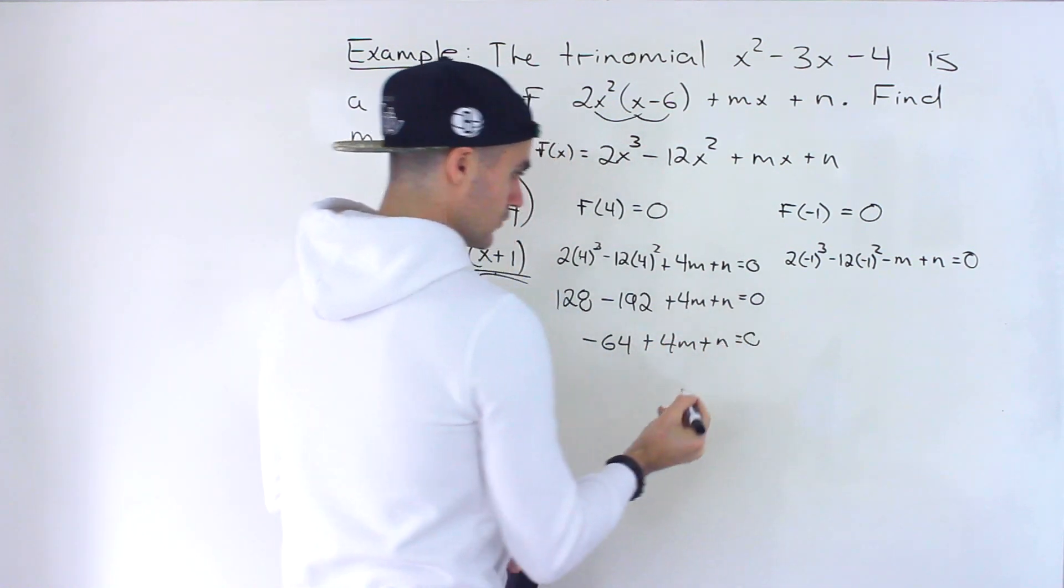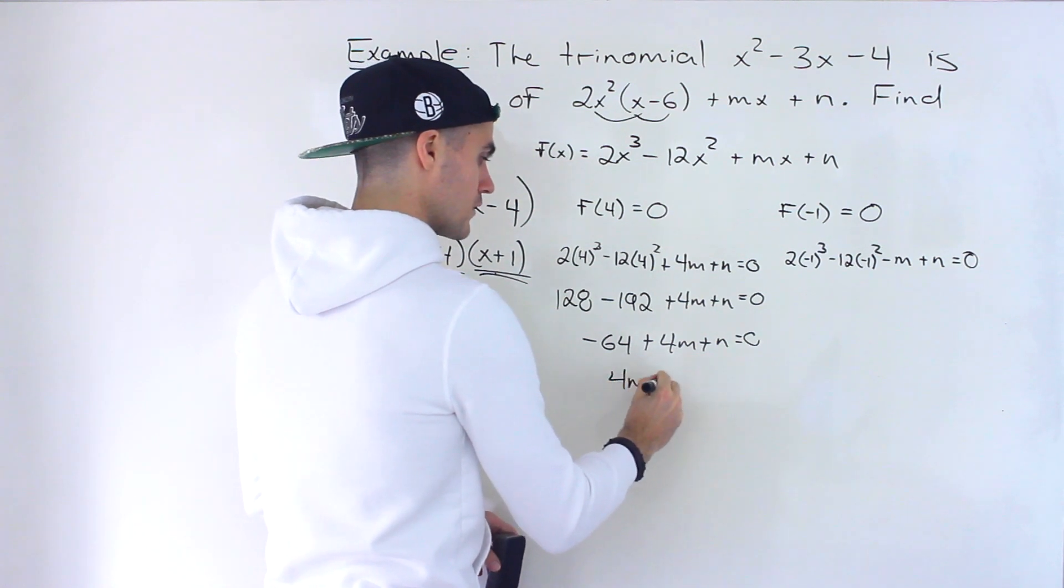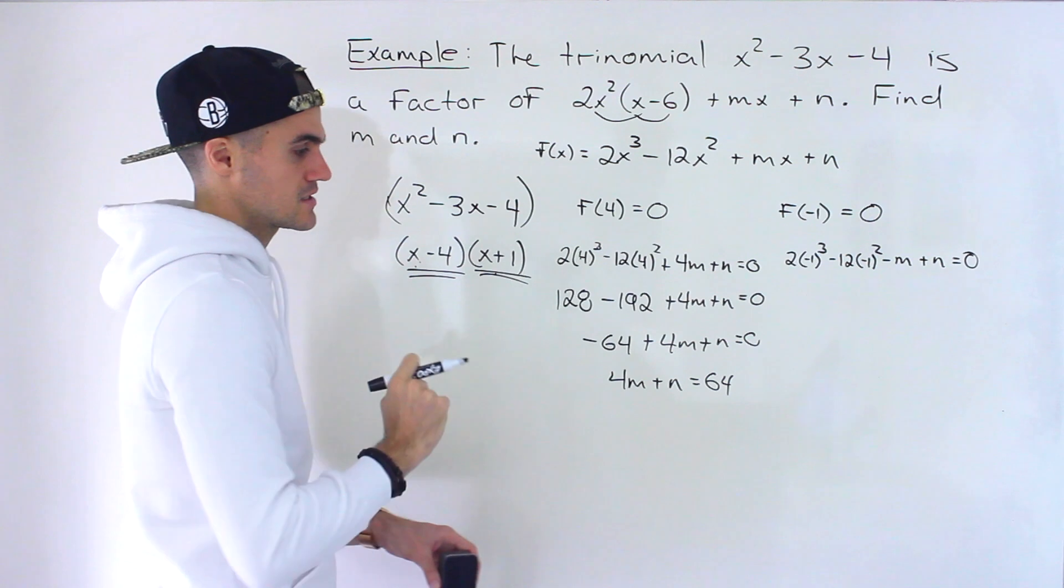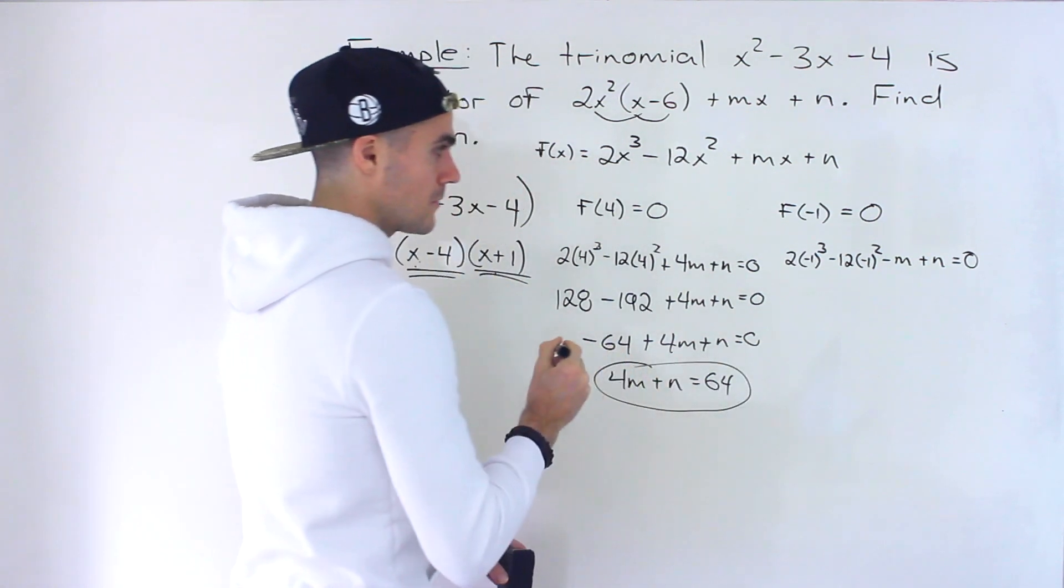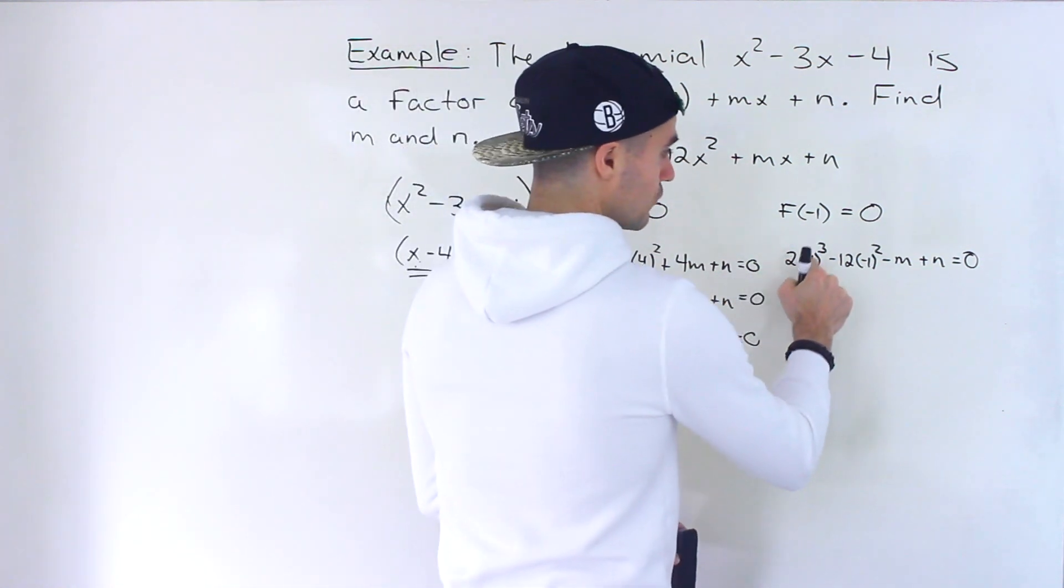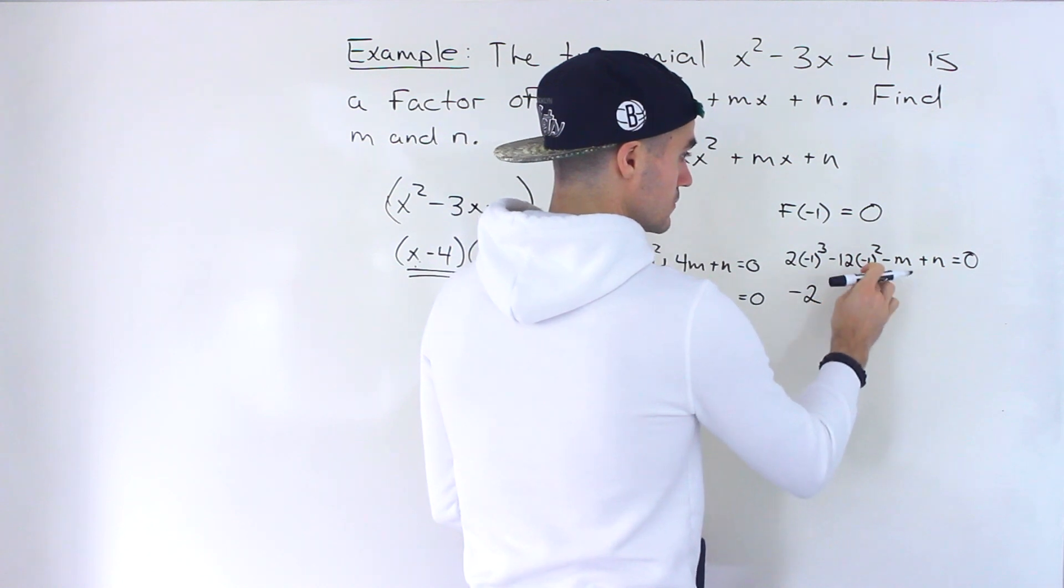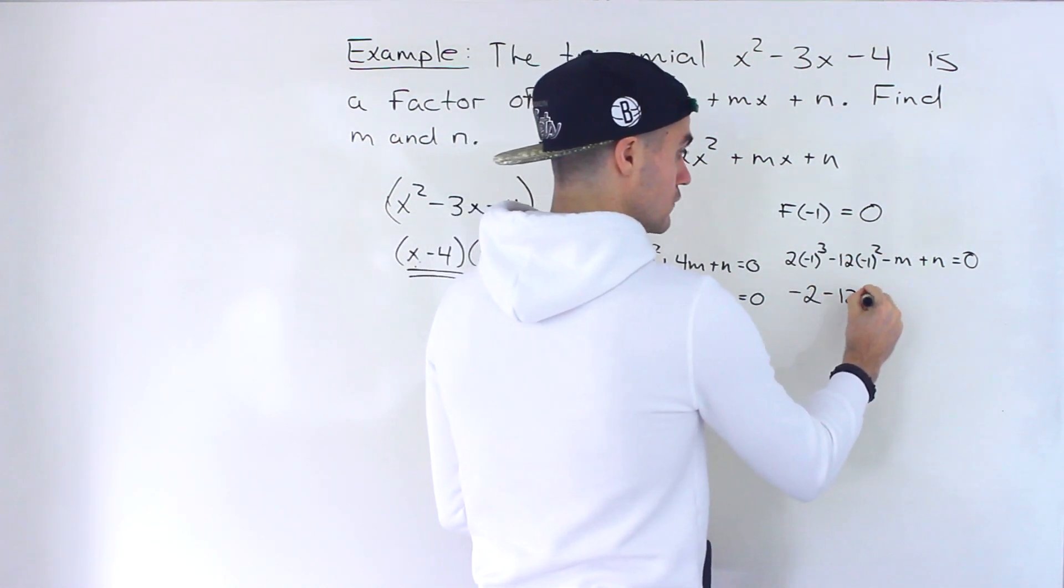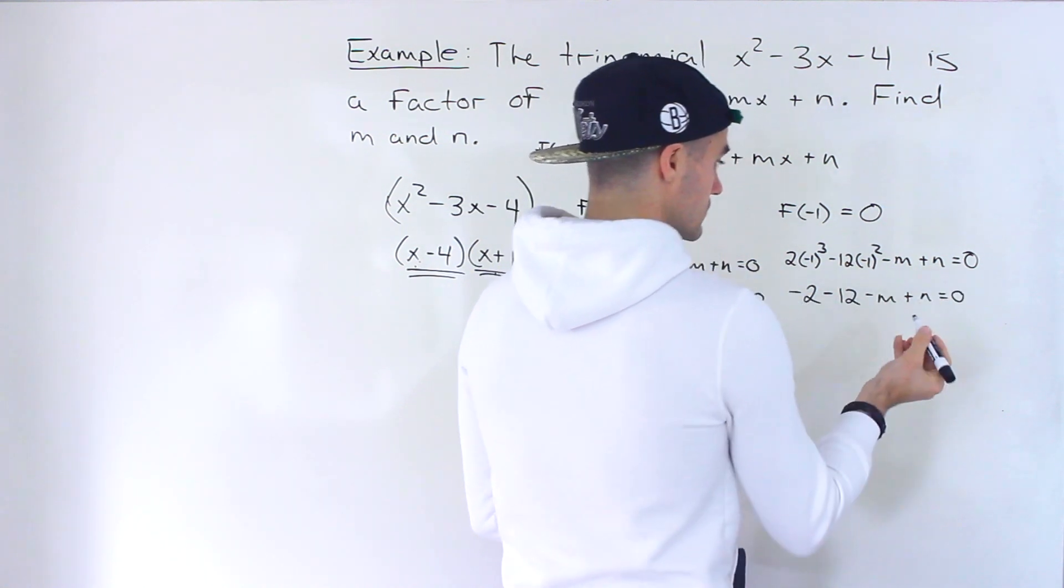Okay so just be careful with your algebra here. And then I'm actually going to keep all of the variables on one side and then I'll keep the numbers on the other. So the negative 64 I'll bring over. You don't necessarily have to but I'm going to put it in that format. And then over here negative 1 to the power of 3 is negative 1 times 2 gives us negative 2. Negative 1 to the power of 2 gives us positive 1 times negative 12 gives us negative 12 minus m plus n equals 0.